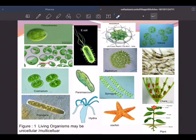You can see here different shapes. Living organisms may be unicellular: Chlamydomonas, E. coli bacteria, Chlorella, Cosmarium. And you can see the multicellular ones like Hydra, starfish, Obelia, and plants. So you got both unicellular as well as multicellular.